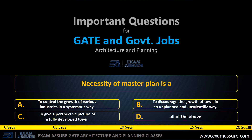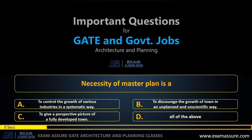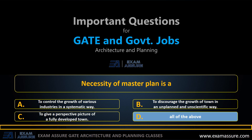Next question. Necessity of a master plan is — Option A: To control growth of various industries in a systematic way. Option B: To discourage the growth of a town in an unplanned and unscientific way. Option C: To give a perspective picture of a fully developed town. Option D: All of the above. The correct answer is: All of the above.